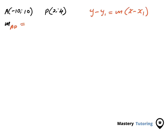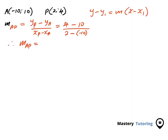The slope of AP equals (y at P minus y at A) over (x at P minus x at A), which is (4 minus 10) over (2 minus (-10)). That gives us -6 over 12, so the slope M of AP equals -1/2. We're going to use the coordinates of point A and this gradient together with the point-slope formula to find the equation of line AP.